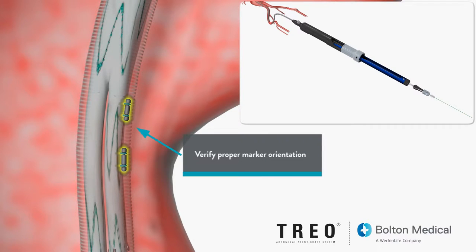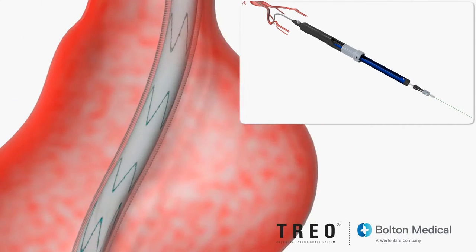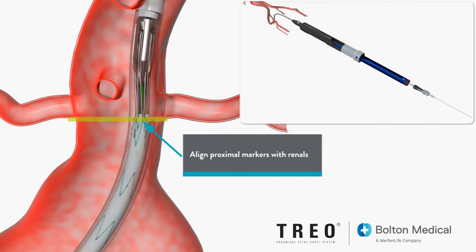Note the position of the flush port as it will indicate the approximate radial orientation of the contralateral gate. Continue advancing the sheath until the delivery system tip is near the deployment site in the aorta. While observing the markers at the proximal end of the stent graft, advance until the proximal end of the stent graft is at the deployment site.